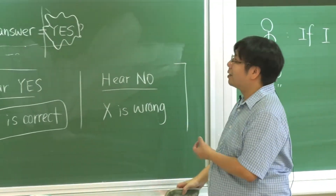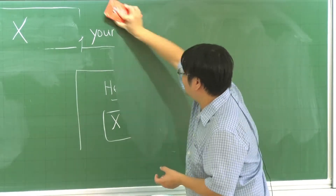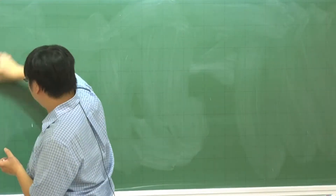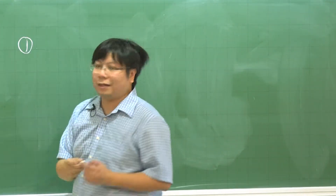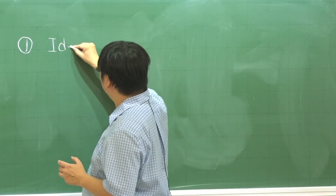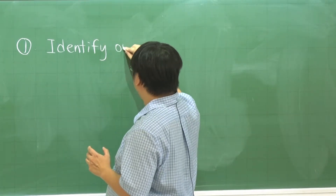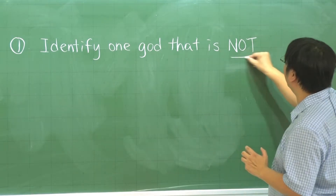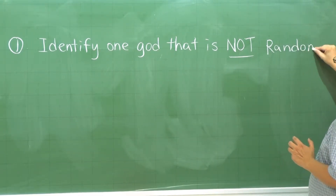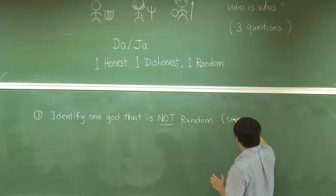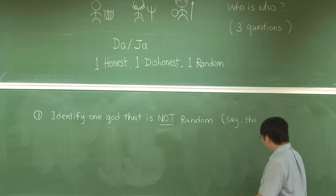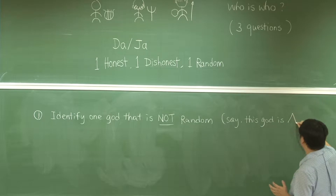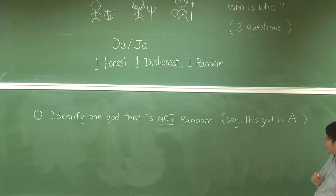The strategy is to ask three questions. There can be more than one strategy, but this is the easiest. In the first question, we want to identify one god that is not random — this is the most important thing. Let's call this god 'A.' So we have god A identified in the first step, and A is not random.